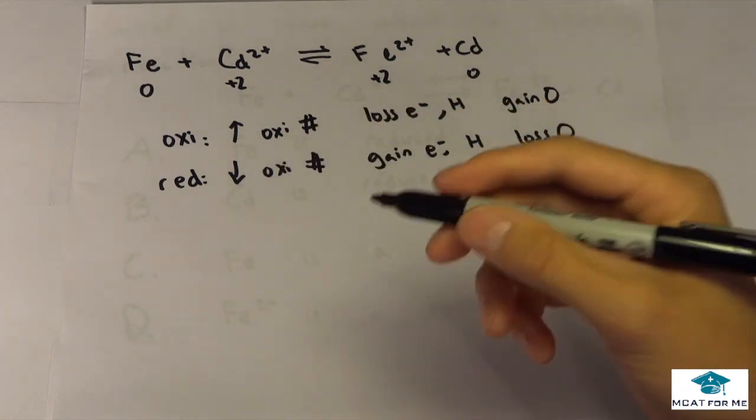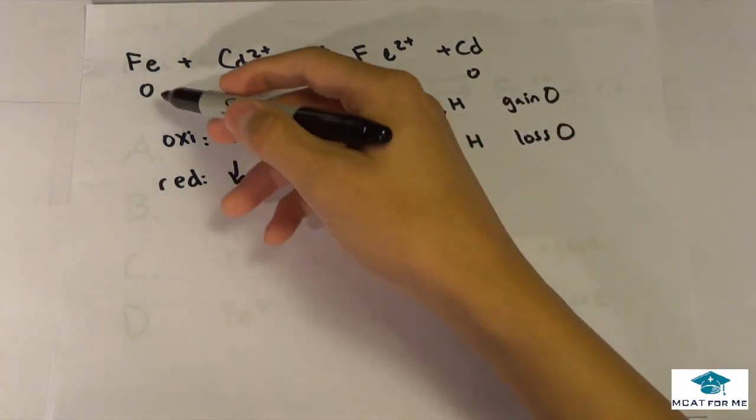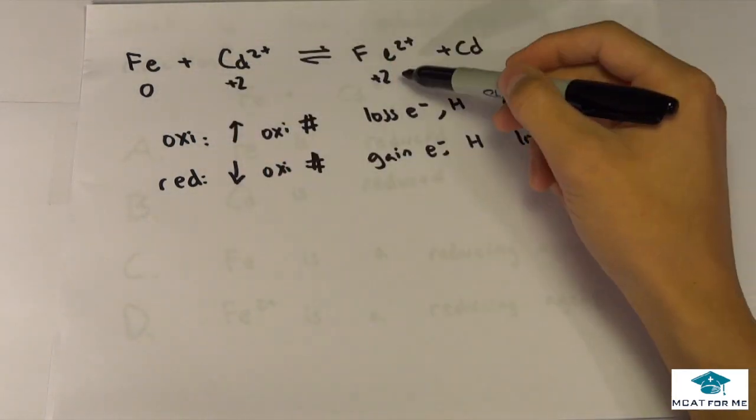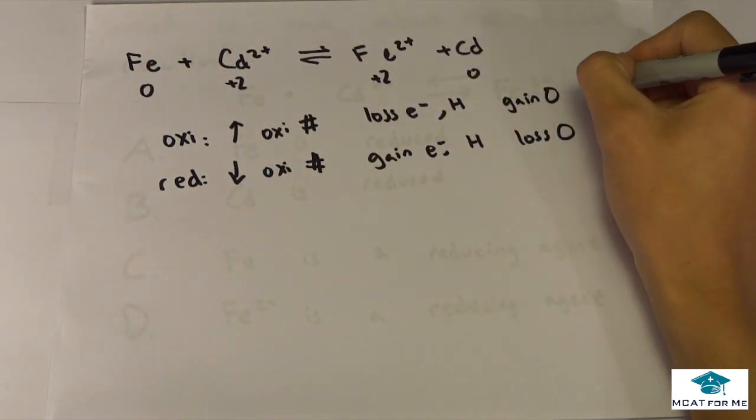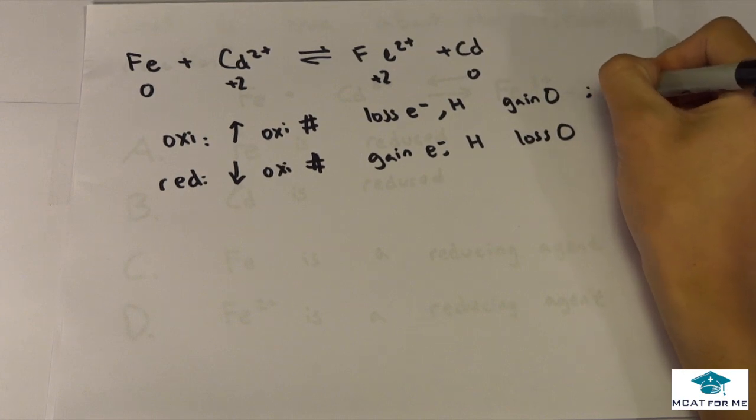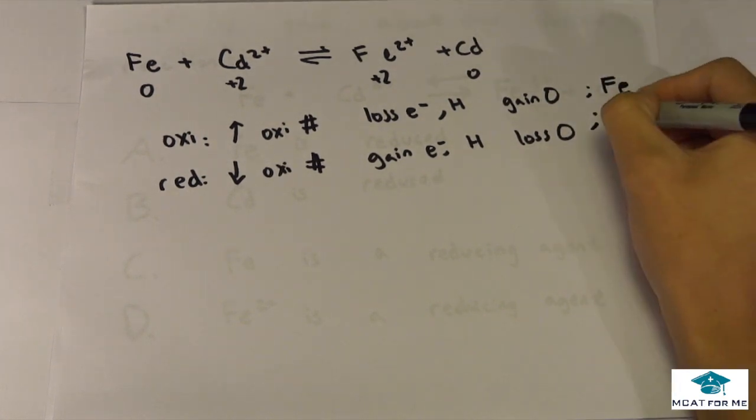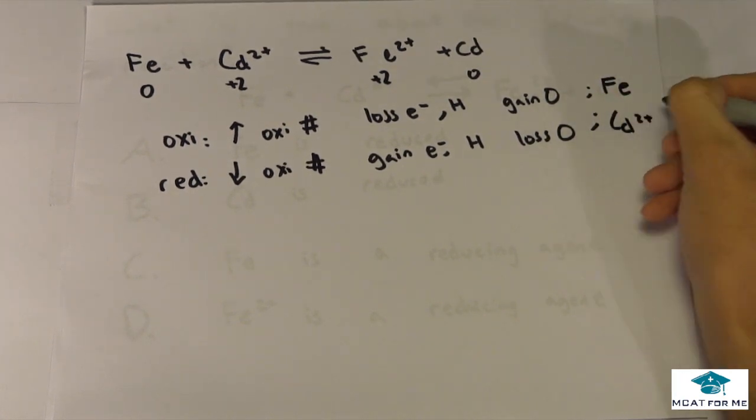So which one is oxidized and which one is reduced? Well if we look at Fe and Cd, well Fe goes from zero to plus two so it's oxidized. So this one would be Fe. And you know that they always come in pairs so this should have to be Cd two plus.